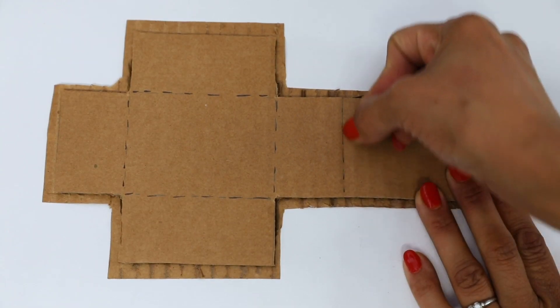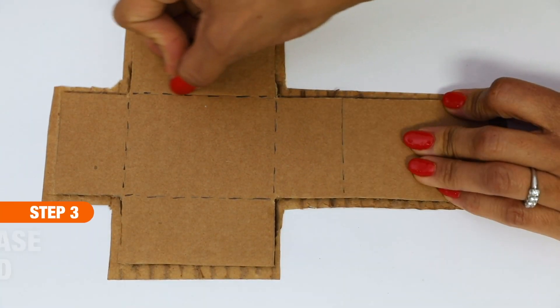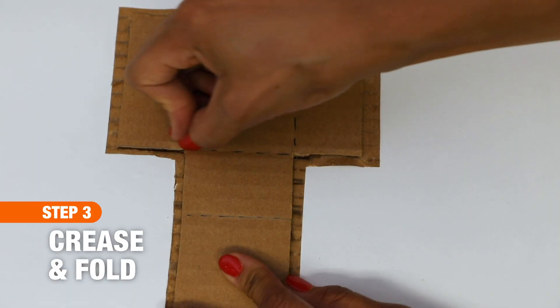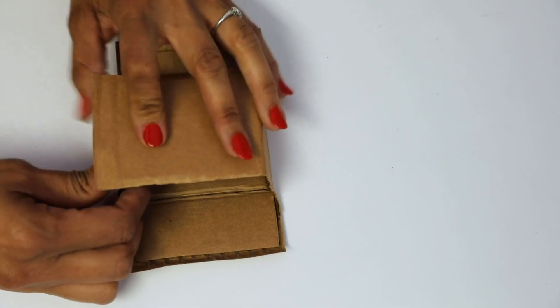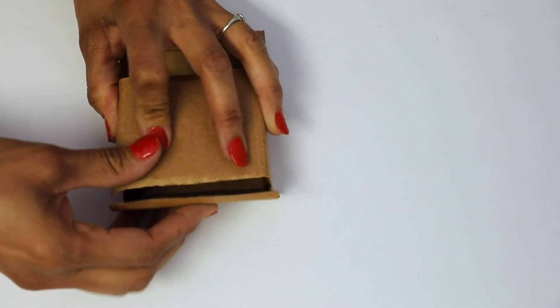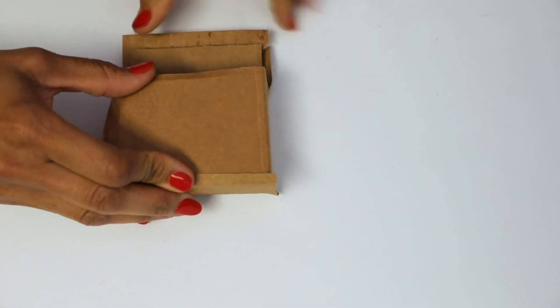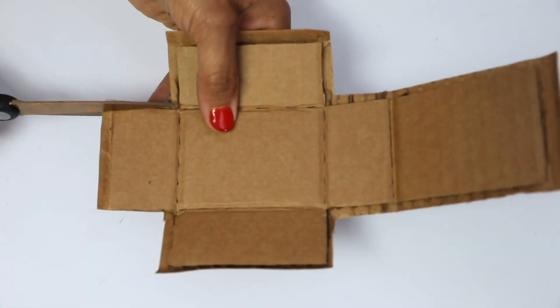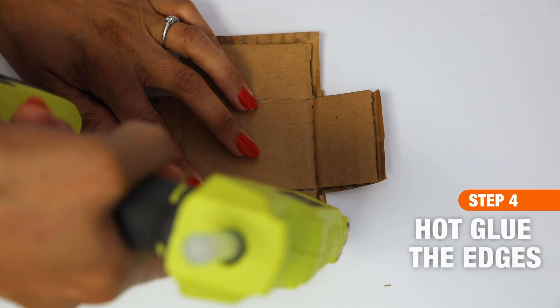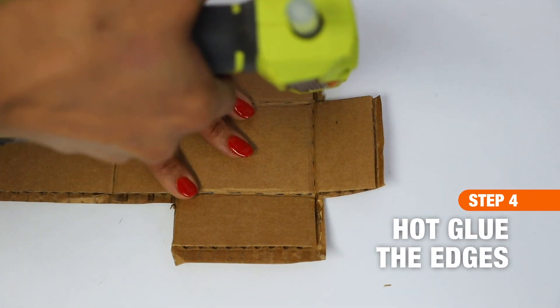Step three, we're going to use our fingernail and go right over these creases here so that when we fold this together it's easy to fold. Practice folding up the body of the crane. It should create a nice rectangle, but if there's any spots where the paper isn't really needed, go ahead and trim that off and then take your hot glue and apply the hot glue along the edges of the paper, that excess paper that we left.